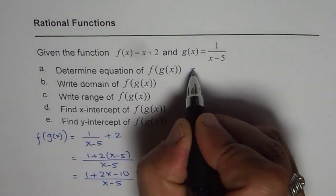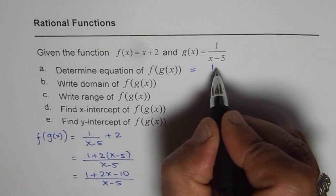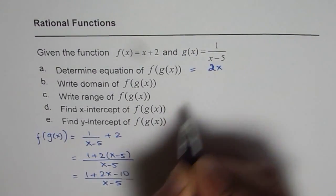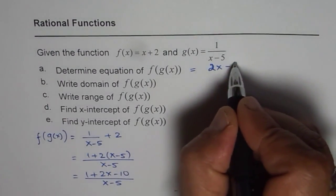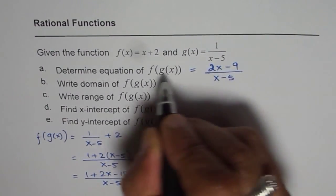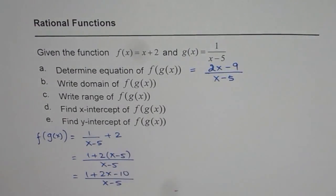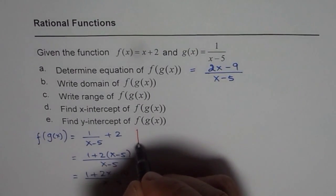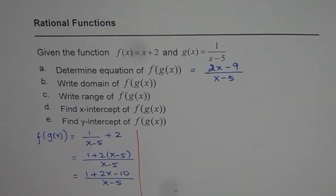So f of g of x is this particular function which I can simplify. 1 minus 10 is minus 9. So I can write f of g of x is equal to 2x minus 9 over x minus 5. So first you find the composite function f of g of x.